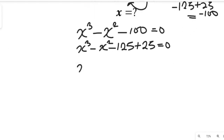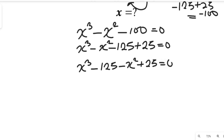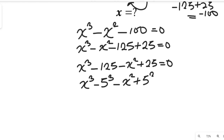We'll separate them: x to the power of 3 minus 125, then minus x squared plus 25, all equal to zero. Remember, 125 is 5 to the power of 3, so we have x to the power of 3 minus 5 to the power of 3, minus x to the power of 2 plus 5 to the power of 2, equal to zero.